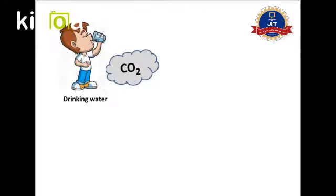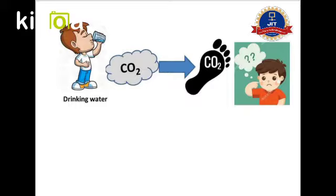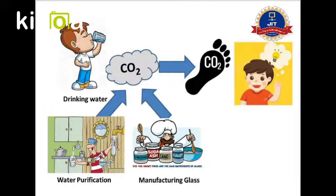For example, if you are carrying out a very simple activity like drinking a glass of water, this activity also has a carbon footprint associated with it. Why? Because energy was used to purify the water, energy was used to pump this water into the tank, and energy was invested in preparing the glass or the utensils. So anything which is made in a factory has some amount of energy associated with it, and consequently has a carbon footprint.